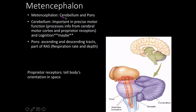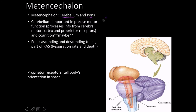The next structure is the metencephalon, which consists of the cerebellum and the pons. The cerebellum is incredibly important in precise motor function, processing information from the cerebral motor cortex and proprioceptors — those things that tell the body's orientation in space. It also might play a role in cognition, though that's still a 'maybe' at this point.